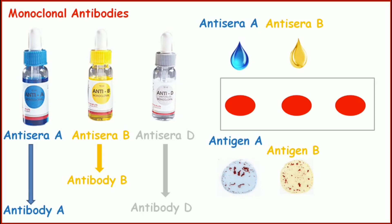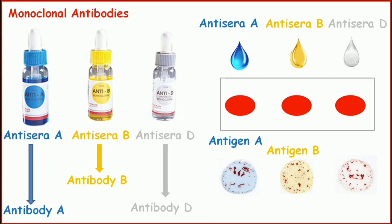Now for the third drop of blood, we add antigen D and mix well. If after mixing we see agglutination or clumping, then the anti-D antibody in the antigen D reagent has reacted with the RH antigen or antigen D and showed visible agglutination. As a result, we can say antigen D is present in the blood, or that RH antigen is present.